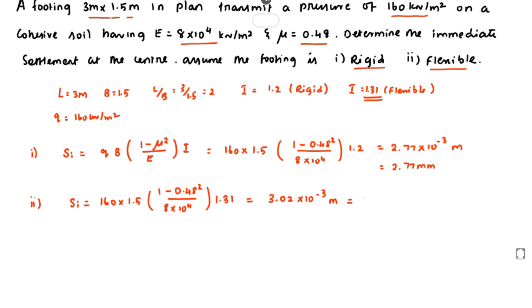Converting, that is 3.02 mm. So the immediate settlement for the rigid footing is 2.77 mm and for the flexible footing it is 3.02 mm. This is the method we use to solve the problem. We will see the next problem in the next video. Thank you.